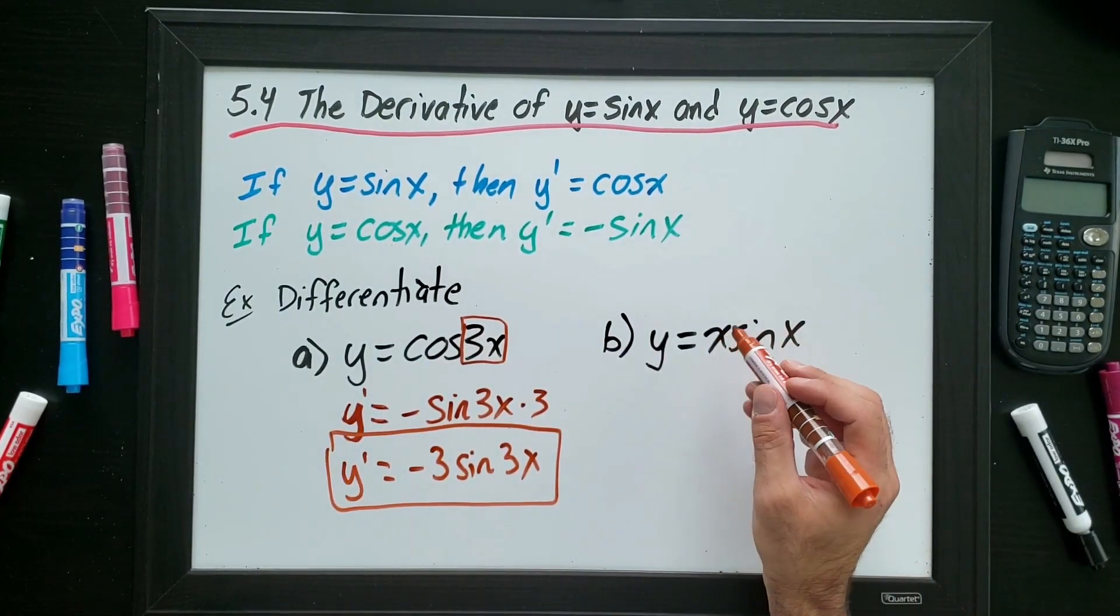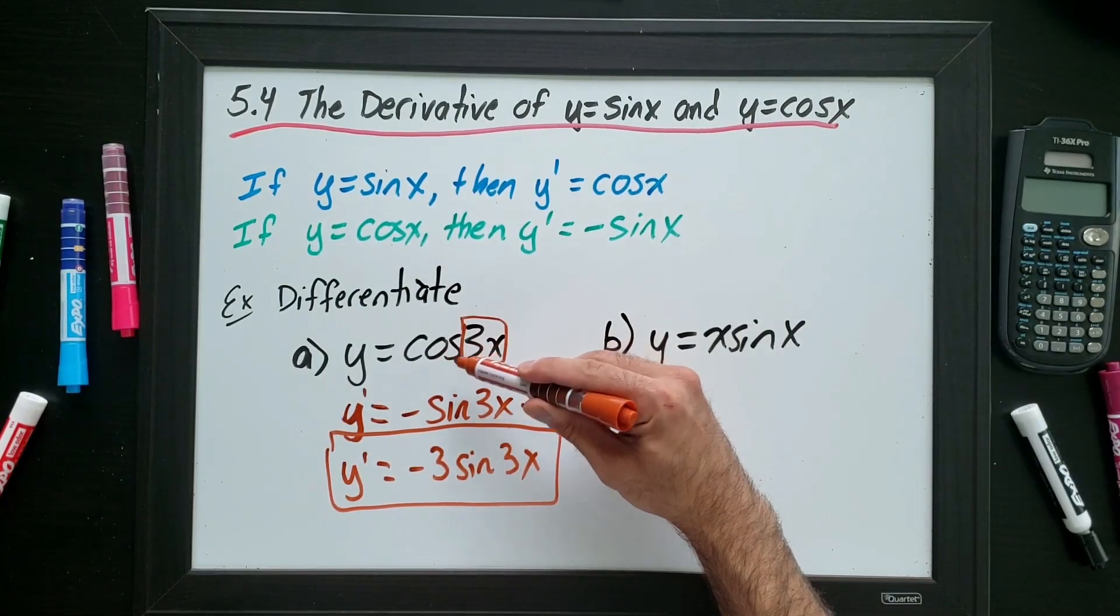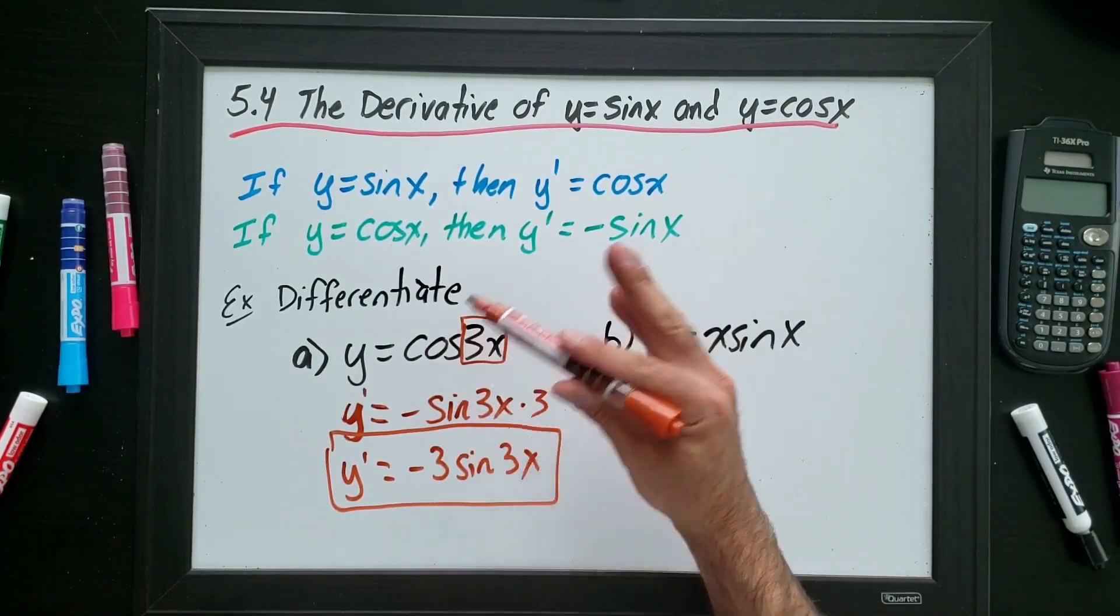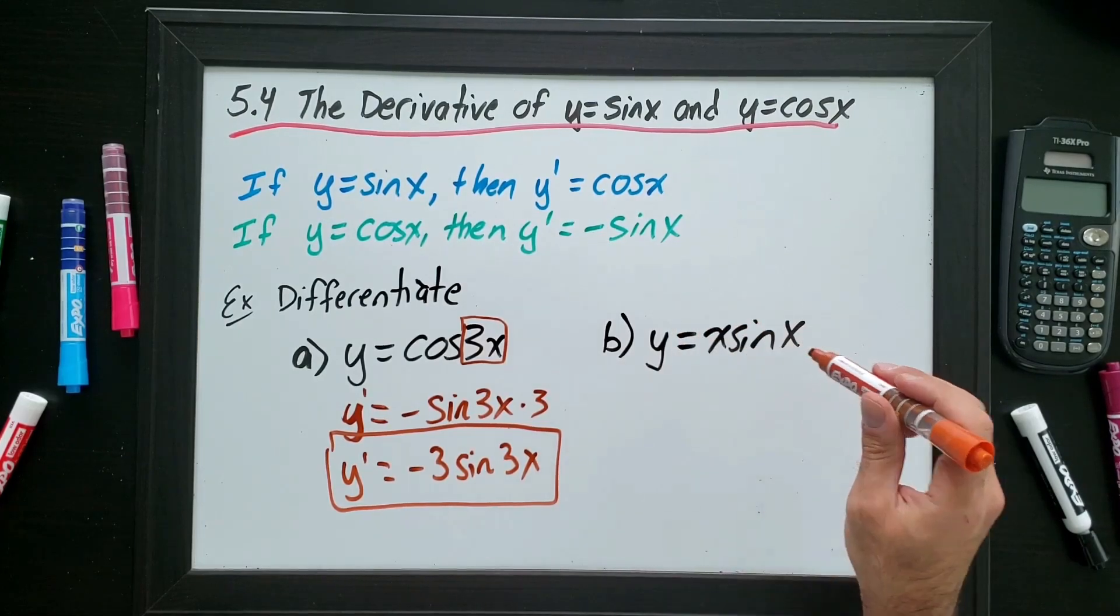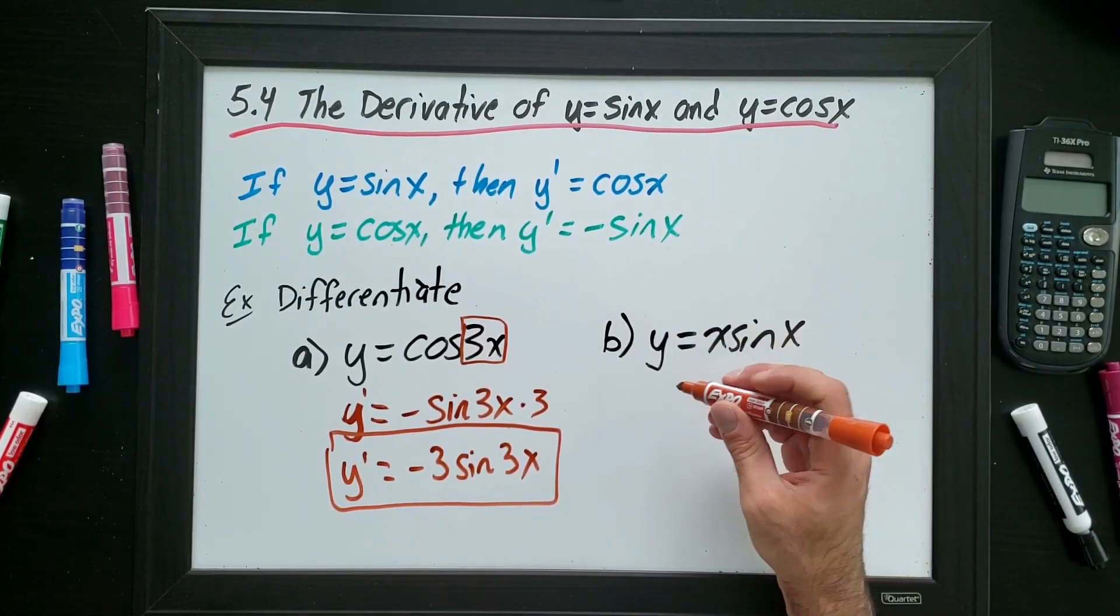Okay, next. Just actually to say something here. This is not product rule. This is not cos times 3x. So please don't think that's product rule. Whereas this is product rule. This is x times sine x.